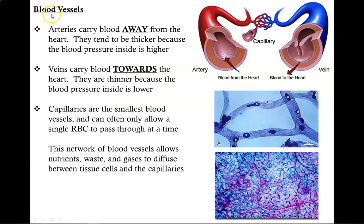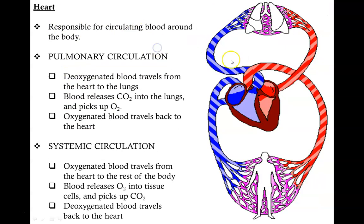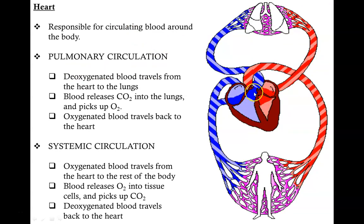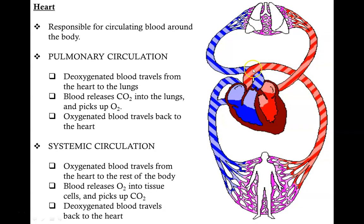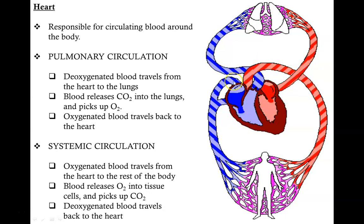There are three major types of blood vessels: arteries, veins, and capillaries. Arteries carry blood away from the heart, while veins carry blood towards the heart. Because blood is pumped away from the heart through these arteries, the arteries have higher blood pressure than in veins, which return to the heart. As such, the walls of arteries are much thicker than the walls of veins.